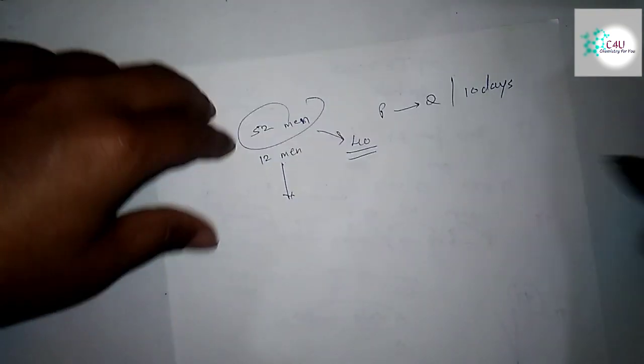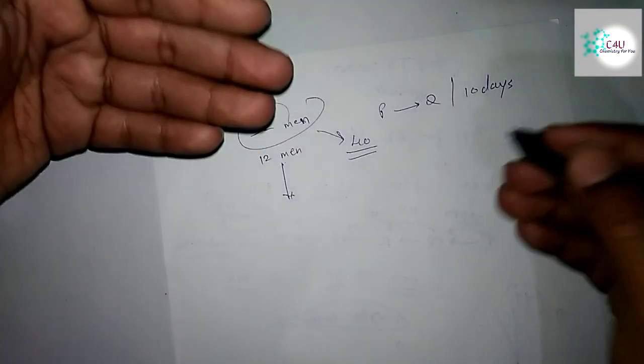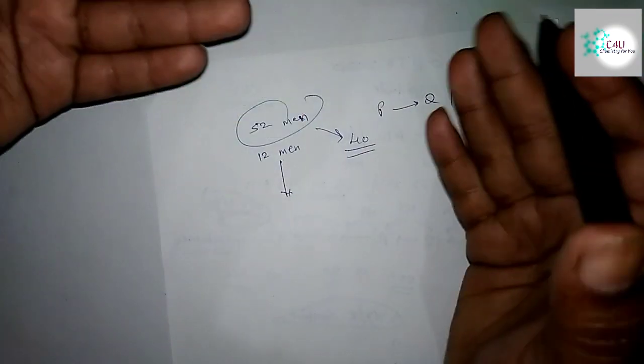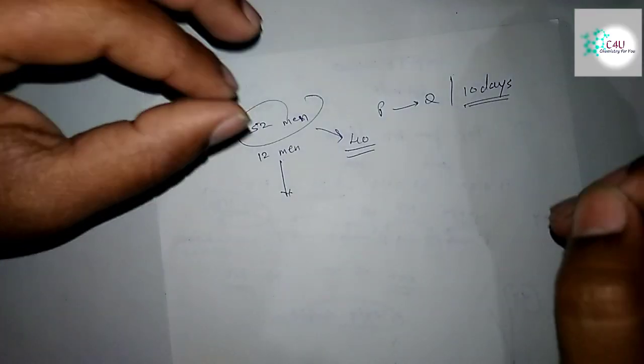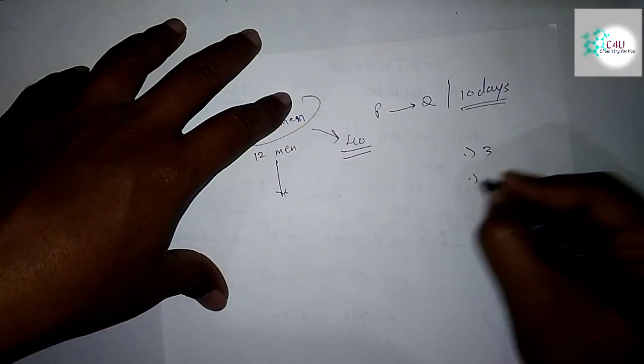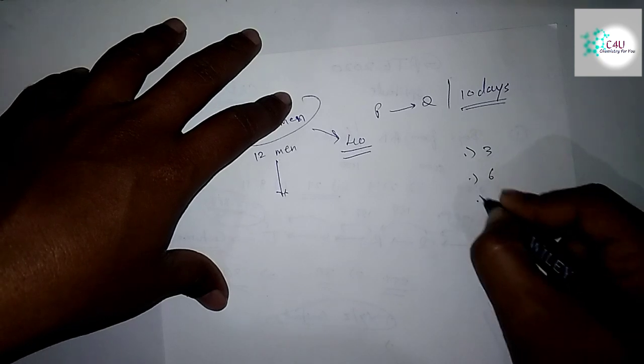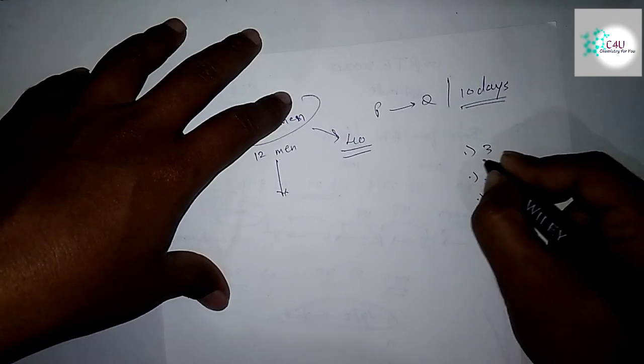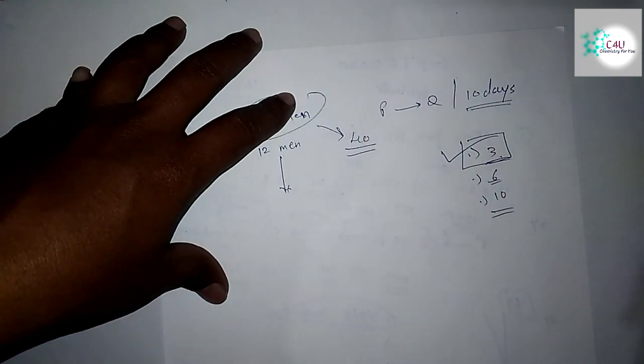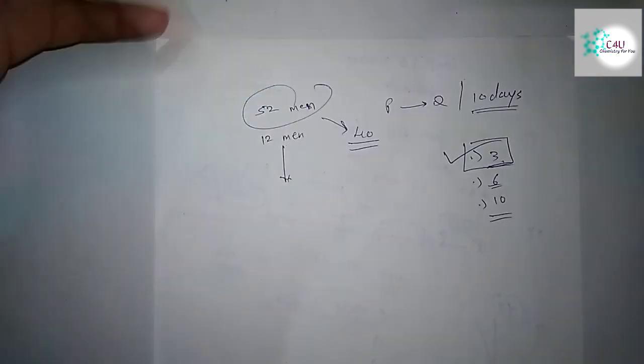How many more days than your estimated time would be required for completion of that work? That was based on just a calculation. The options given were 3, 6, 10. With my calculations, the correct answer is 3, and absolutely the correct answer is only 3. I will go with its explanation in the next video.